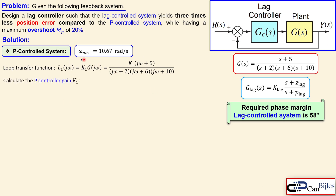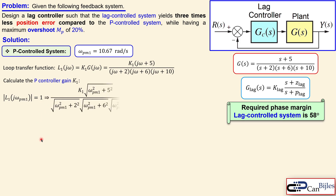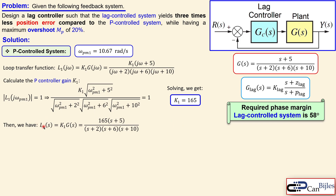We now calculate the gain required at the phase margin frequency by setting the loop transfer function magnitude to 1 at omega_P1. Taking the magnitude of the numerator divided by the denominator — using the squares of the real and imaginary parts — and solving gives K1 = 165 as the gain for the proportional controller. The loop transfer function L1 is then equal to K1 times G, with K1 = 165 and the plant transfer function combined.